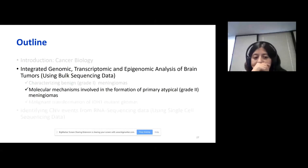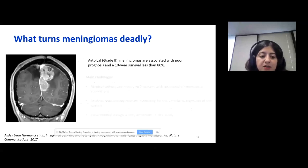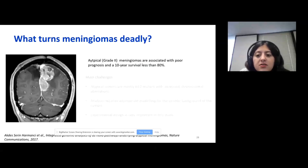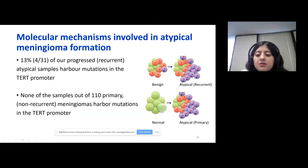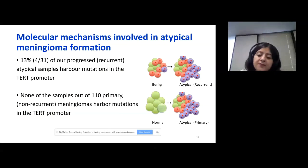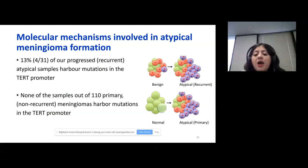Now I would like to talk about another project where we tried to identify the molecular mechanisms involved in the formation of primary atypical meningiomas. Atypical meningiomas are associated with poor prognosis and less than 80% ten-year survival. Atypical meningioma can either form from benign meningiomas — in which case we say it is recurrent atypical — or a normal cell can transform directly into atypical meningioma, in which case we say it is primary atypical meningioma.